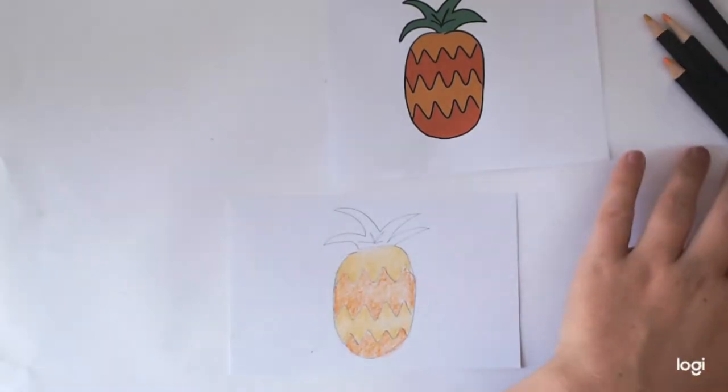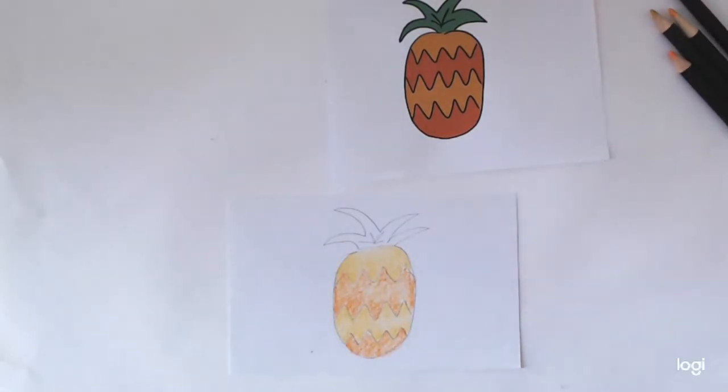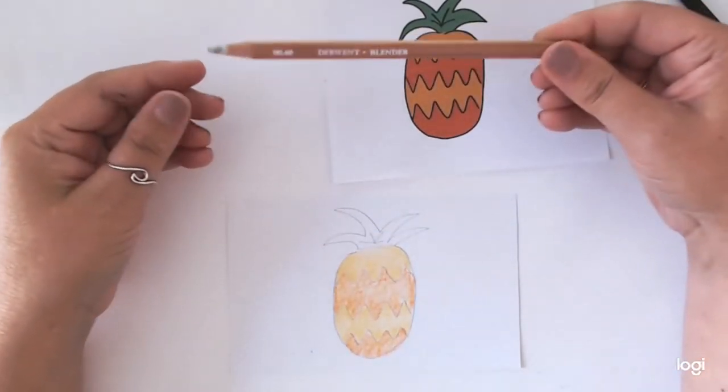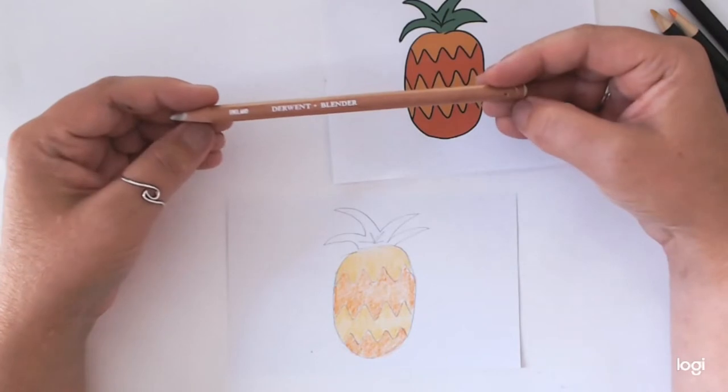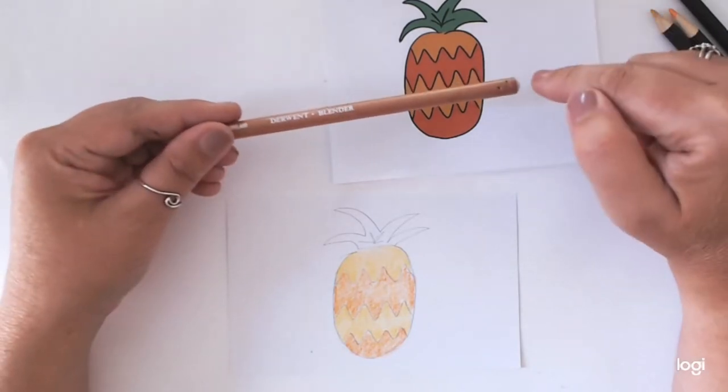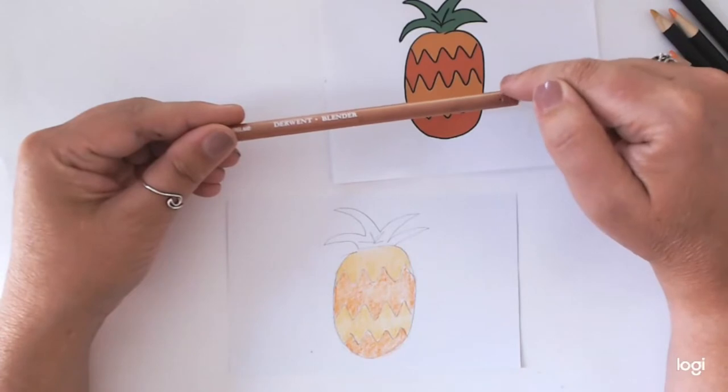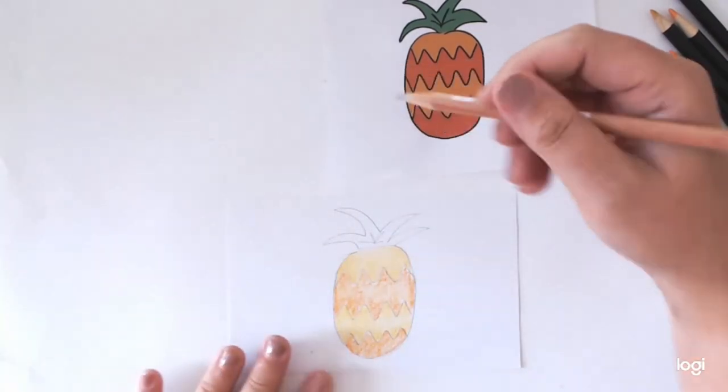One thing you will also need is a blender pencil. You can get them online quite easily. They are quite inexpensive. My cats love the end of pencils, they're a nightmare.